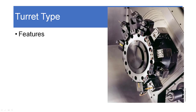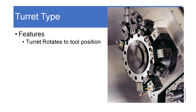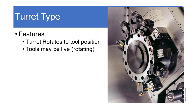The first is a turret type tool changer, and we'll discuss two types: one that supports live tooling and one that does not. In a turret type, a large rotary turret rotates into position — it can rotate either towards you or away from you. The tools may be live, meaning they rotate themselves. You can see some live tooling in the lower right-hand corner of this picture. Live tooling may be oriented along the Z-axis, or it may be at an angle like the ones shown in the top bar.